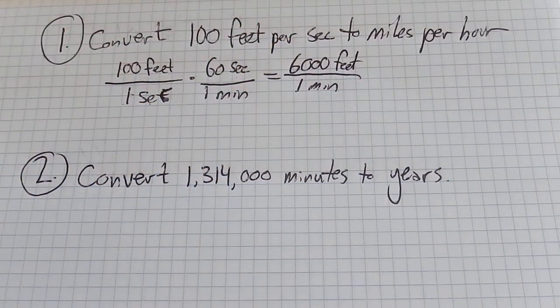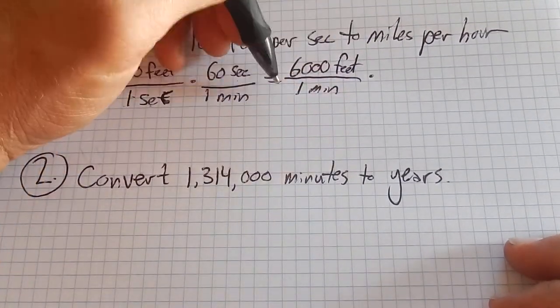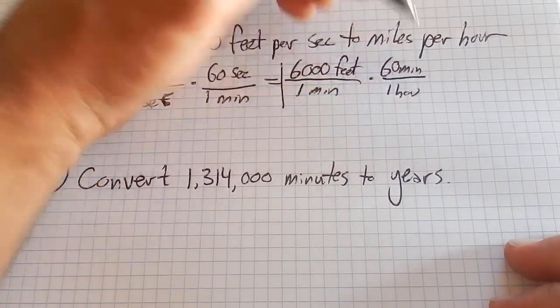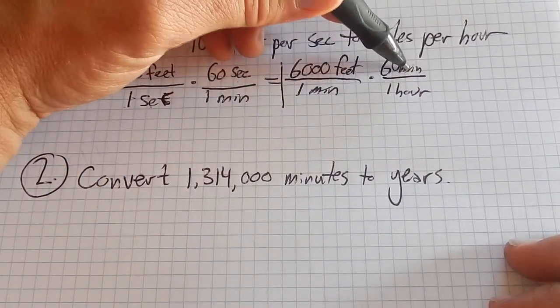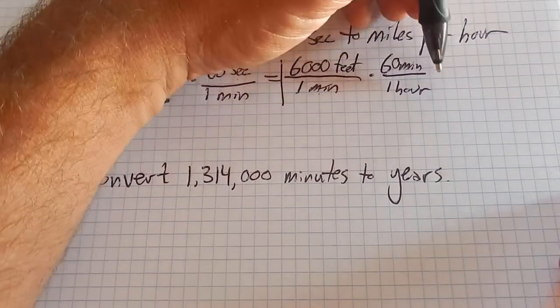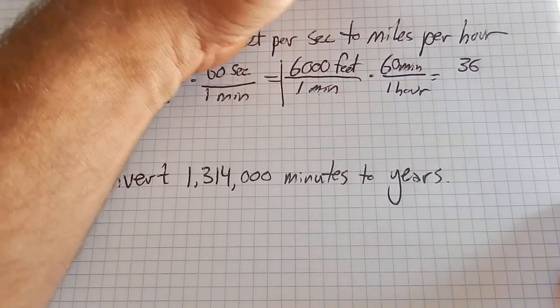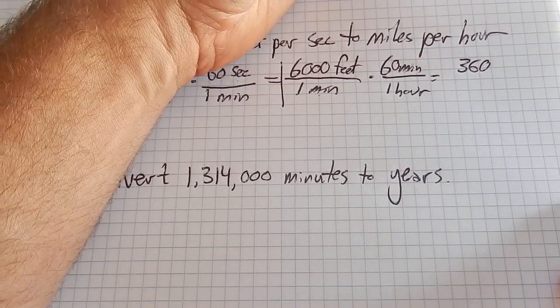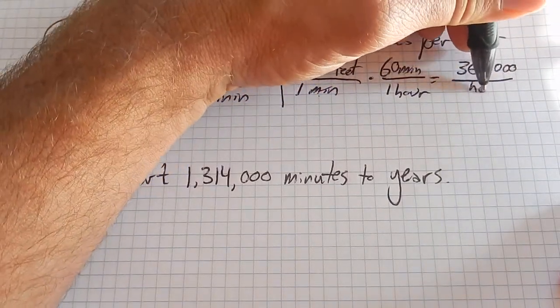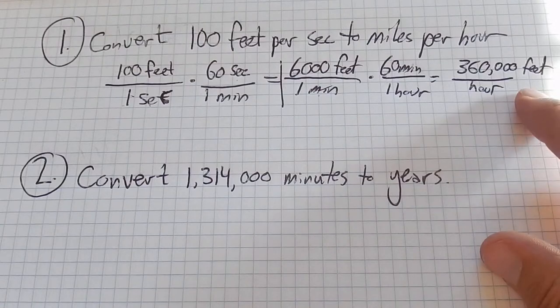Now what I can do next is turn my minutes into hours. So again, 60 minutes is 1 hour. Notice I have minutes, minutes - my minutes are going to divide out. So this would be 6,000 times 60. Grab that on my calculator - what is that? 360,000 it looks like. So that would be that many feet in 1 hour.